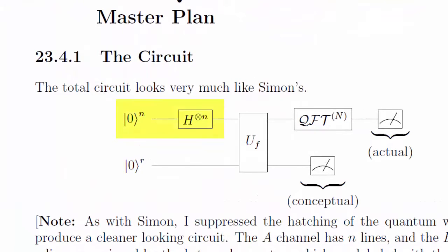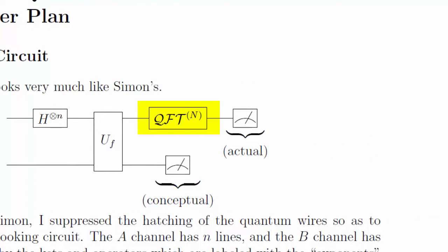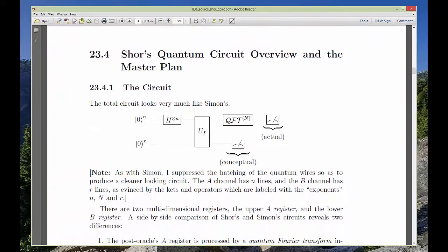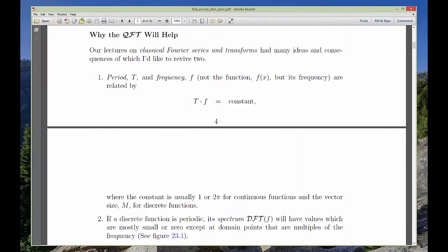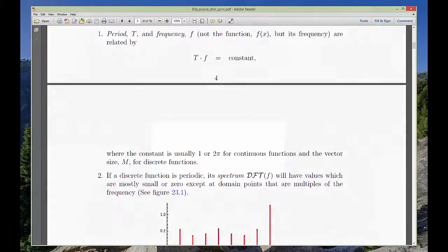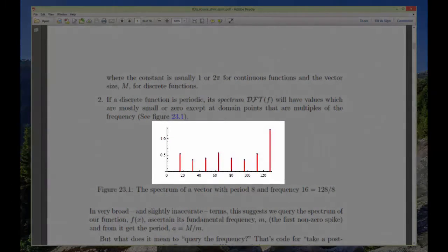First, quantum parallelism tees up the ball for the oracle. Then, the QFT knocks it out of the park by enabling a Fourier basis measurement. The reason the QFT works is that it sets up a measurement of the function's spectrum. And the spectrum is where the frequency is most evident.